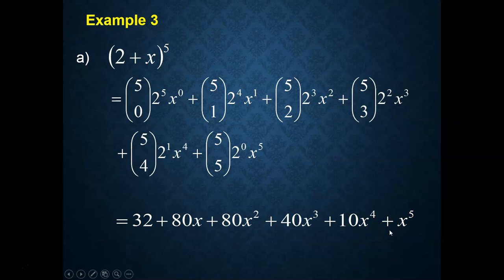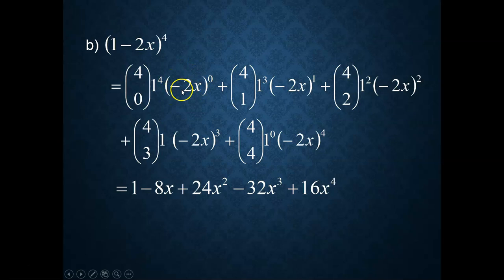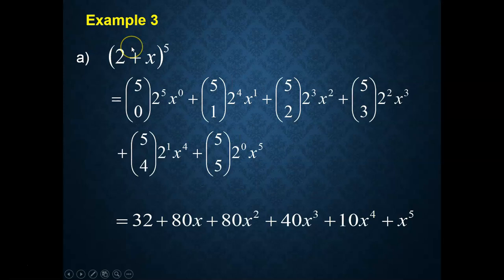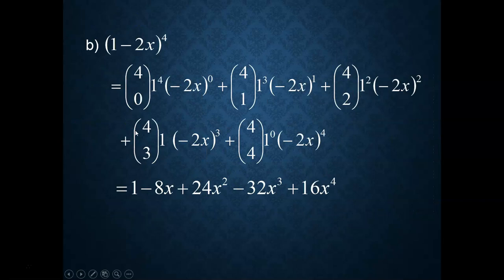For (1−2x)⁴, the minus 2x means B is not just x, but minus 2x. The minus sign must be included inside the binomial formula — this is a common mistake. Since it's to the power of 4, n equals 4. So you have 4 choose 0, 4 choose 1, 4 choose 2, 4 choose 3, up to 4 choose 4 to expand the binomial.